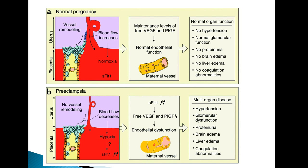This promotes the release of VEGF and PIGF. In normal pregnancy, there are normal levels of VEGF and PIGF to maintain normal endothelial function. However, if there are toxins — such as sFlt-1 — this will cause free VEGF and PIGF to become lower, so the balance becomes disrupted, which promotes endothelial dysfunction.